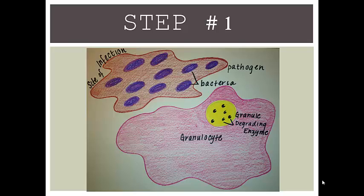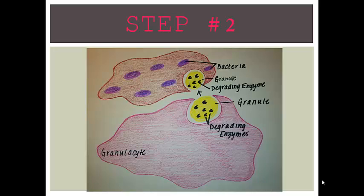The first step of degranulation is when the granulocyte, which is similar to the phagocyte in phagocytosis, moves to the area of infection in the body by a pathogen. In step 2, the granulocyte secretes degrading enzymes out of the cell and into the infected area.